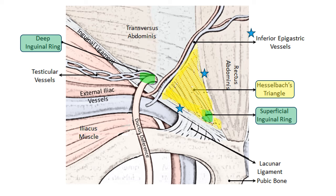This diagram shows the three important landmarks: the deep ring, the superficial ring, and the weakness in the Hesselbach Triangle. An indirect inguinal hernia comes out through the deep ring and enters the inguinal canal. A direct inguinal hernia comes out through the weakened posterior wall of the inguinal canal and goes towards the superficial inguinal ring, then into the scrotum. Between these two rings is the inferior epigastric artery, which is a branch of the femoral artery, going upwards and medially towards the midline.